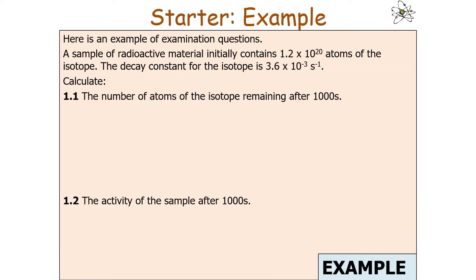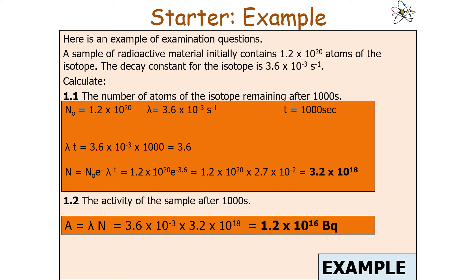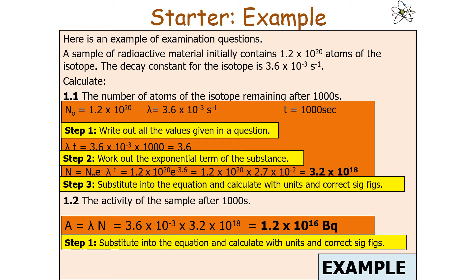Example question: a sample of radioactive material initially contains 1.2 × 10²⁰ atoms of an isotope with decay constant 3.6 × 10⁻³ s⁻¹. To find the number of atoms remaining after 1,000 seconds, write out the values, calculate the exponential term lambda t, then substitute into N equals N₀ e to the minus lambda t. This gives 1.2 × 10²⁰ times e to the power of minus 3.6, which works out to 3.2 × 10¹⁸ atoms.